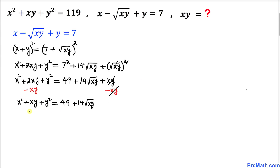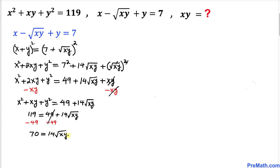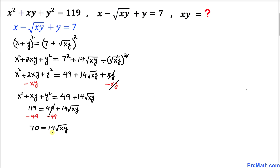So we have 119 equals 49 plus 14 times the square root of x·y. Subtracting 49 from both sides: 119 minus 49 gives us 70, equal to 14 times the square root of x·y. Dividing both sides by 14, we get the square root of x times y equals 5.